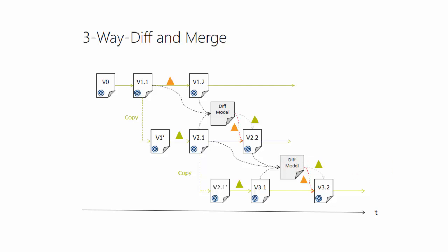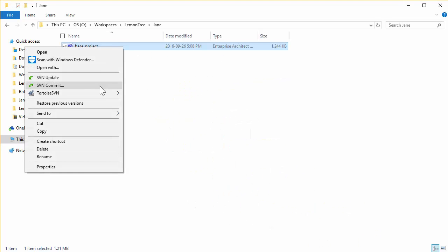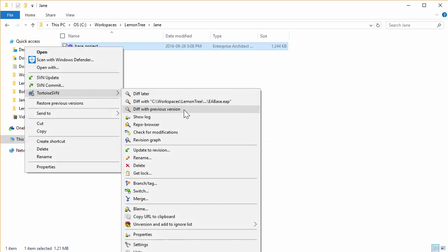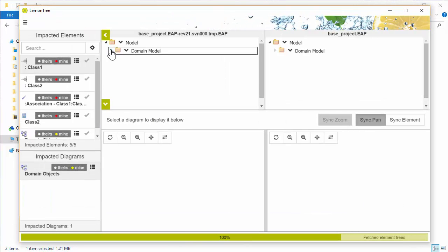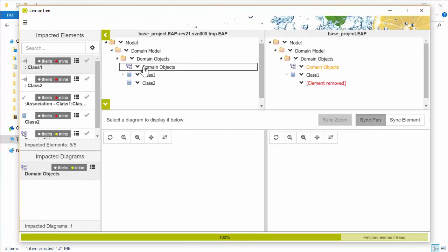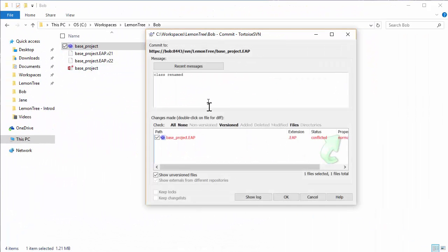LemonTree is seamlessly integrated into Tortoise SVN like an external diff-merge program, meaning that all actions related to diff, merge, or conflict resolution will be handled by LemonTree outside of Enterprise Architect.